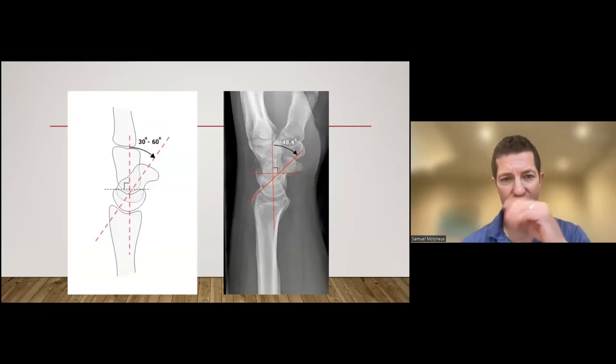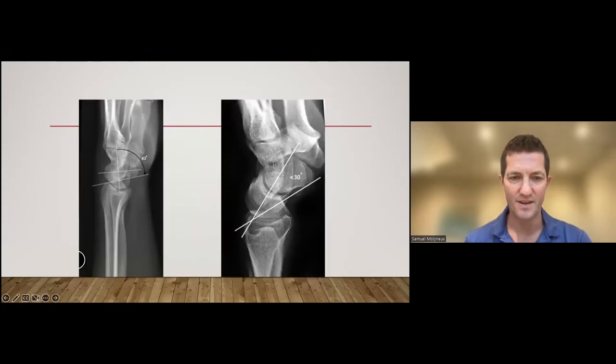Look for that scapholunate angle. The mid-axis of the scaphoid and the mid-axis of the lunate, the angle between the two should be somewhere between 30 and 60 degrees. Here's a normal one with a line drawn up the scaphoid, line drawn up the middle of the lunate, and that angle is between 30 and 60. If you see that angle increased, then they've got that DISI deformity. If you see that angle decreased, then they've got that VISI deformity.